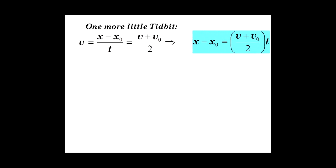And I'll leave you with one more little tidbit, namely, the average velocity is displacement over time, x minus x zero over t, which is the final plus initial. Just add the two velocities, divide by 2, and that gives you, when we multiply by time, x minus x zero, the displacement equals the average velocity times time.